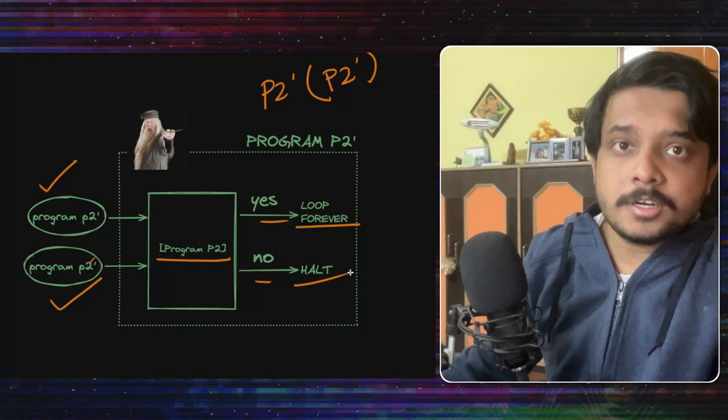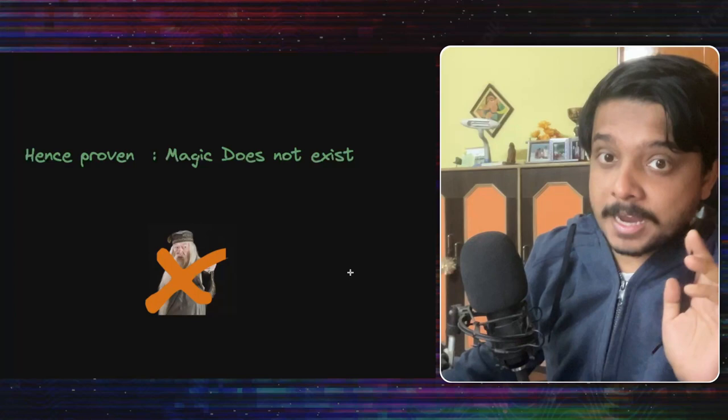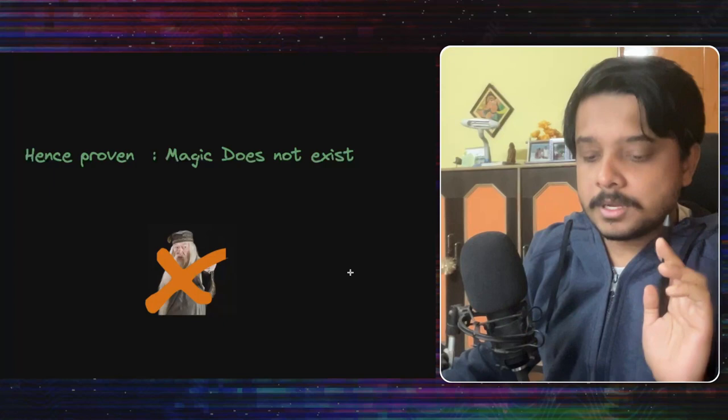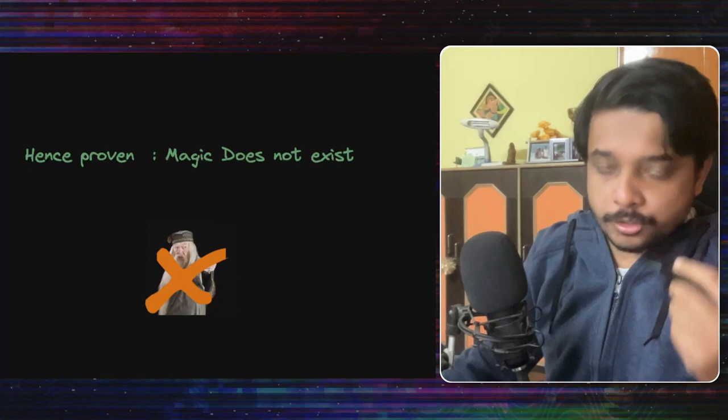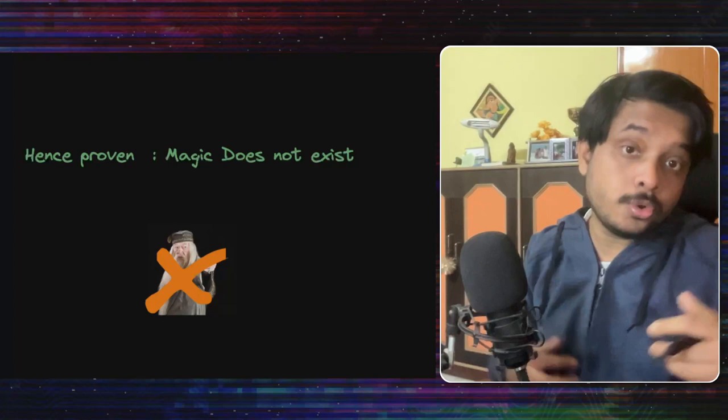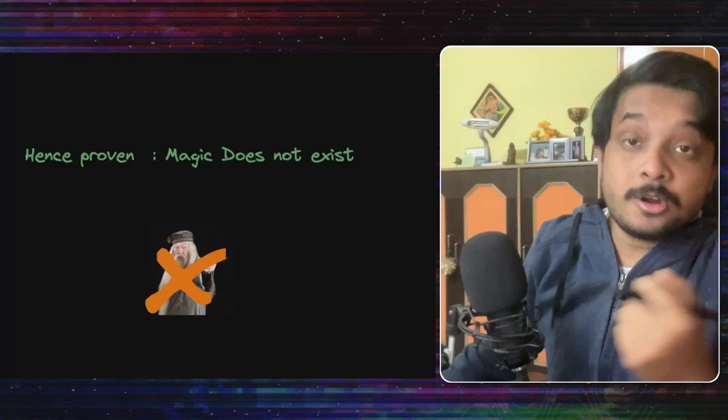And since we have a paradox, we can prove that our assumption itself was wrong that a computer like this, a program like this which can solve the halting problem does not exist. Now you understand that some parts of this video might be a bit confusing and some parts of this might be very new to you about theory of computing. But what you need to do is you need to go through it again or you need to make notes or you can also look up other resources, google it or something like that and then you will be able to understand it completely if you have some gaps.